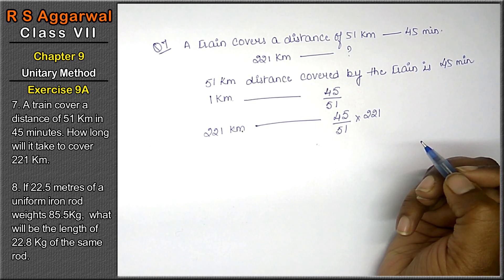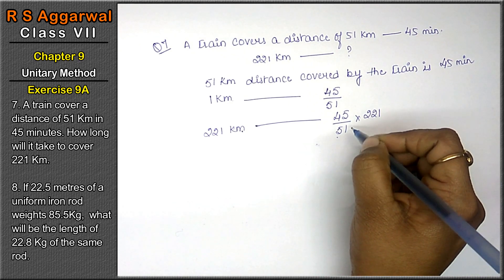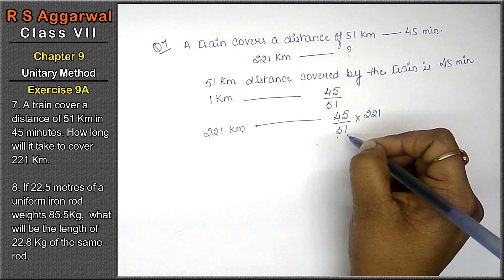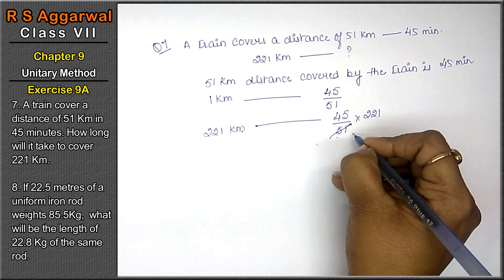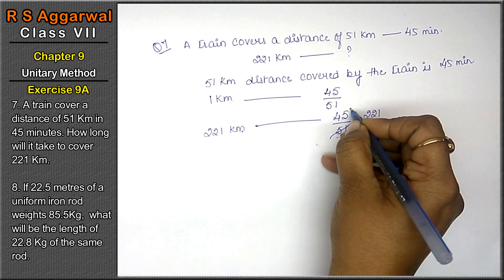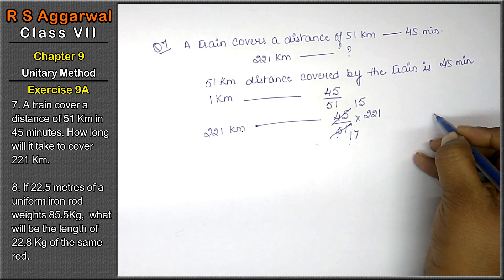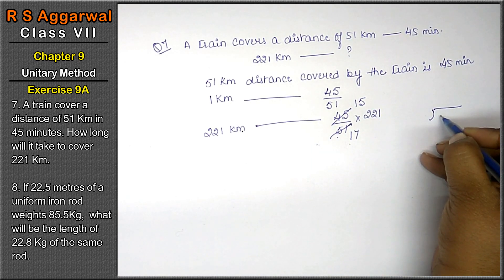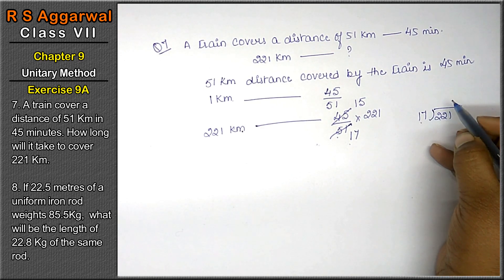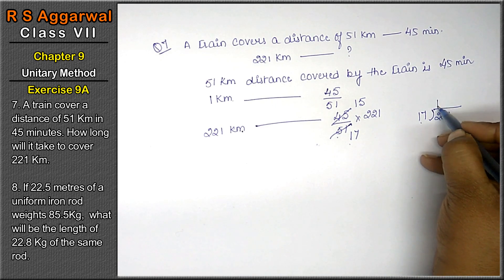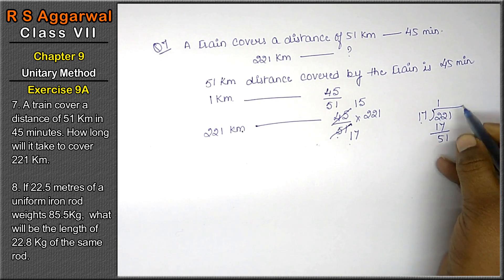Now, how will we calculate it? 51 — 3 ones are 3, 3 sevens are 21. 3 ones are 3, 3 fives are 15. Now 17. 221 divided by 17. 17 ones are 17. 3, 4, 5 — 51. Now 17 into 13.